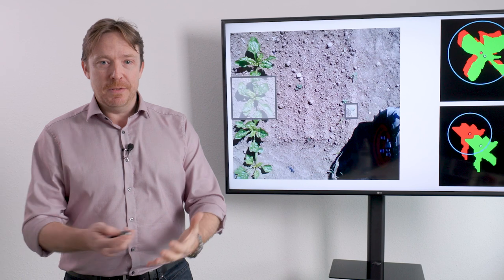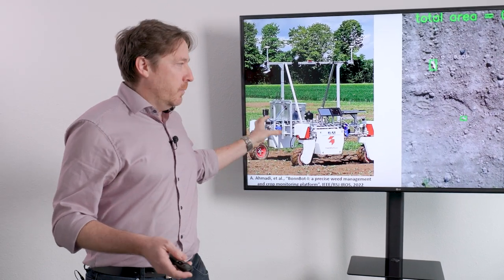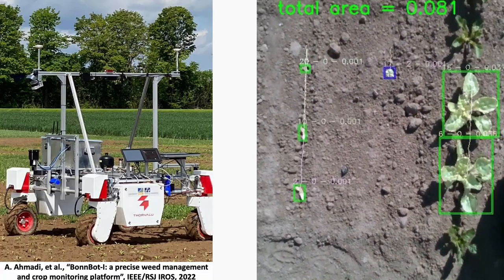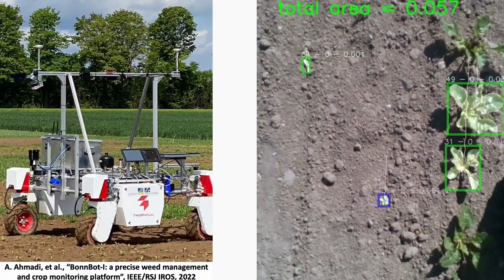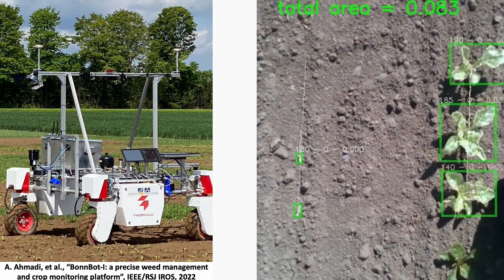And that allows us to do things for instance on Bondbot to go through and actually detect all the different sugar beet in the field. These are now green within there, and all the different weed species are the different colors within the field as well.